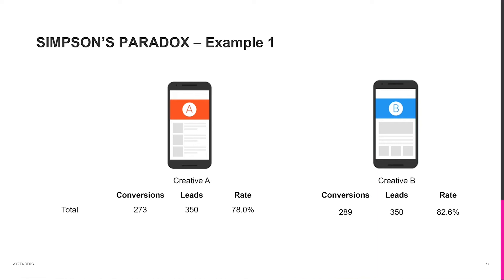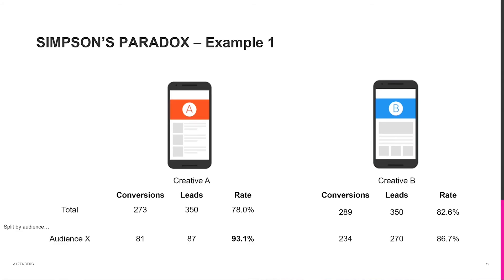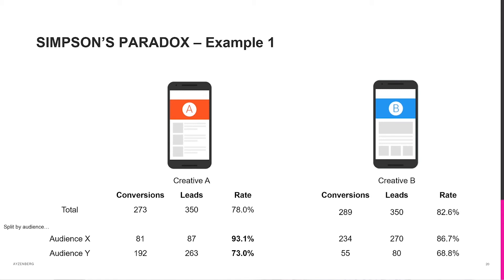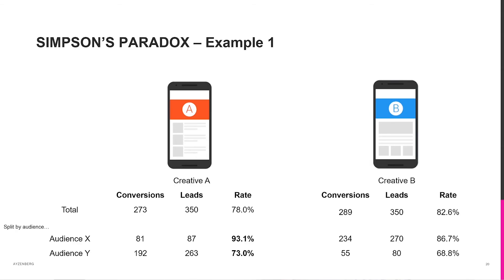Let's do some diagnostics on Simpson's paradox. We can split into two audiences and look at creative A first — it turns out creative A actually has a better conversion rate than creative B for audience A. And for the second audience, creative A again has a better conversion rate than creative B. So in both audiences in isolation, creative A wins. In this example, it's the conversion allocation between the two audiences that's having the effect. The 192 leads on the worst-performing audience Y for creative A is pulling down the total rate. The conclusion: figure out why audience X is only getting 87 leads. If you can't squeeze more performance out of that audience for creative A, run creative A for audience Y and creative B for audience X.